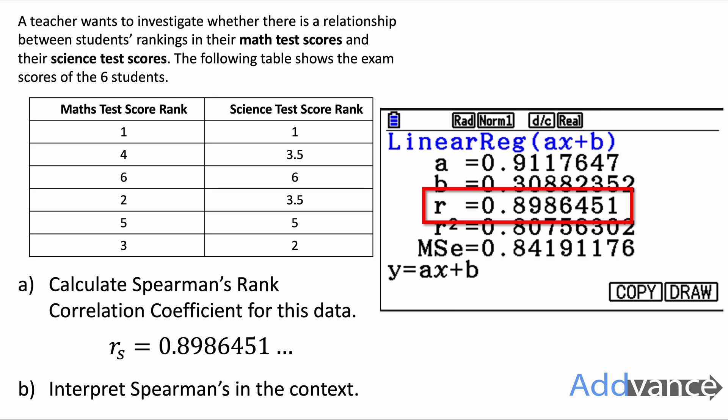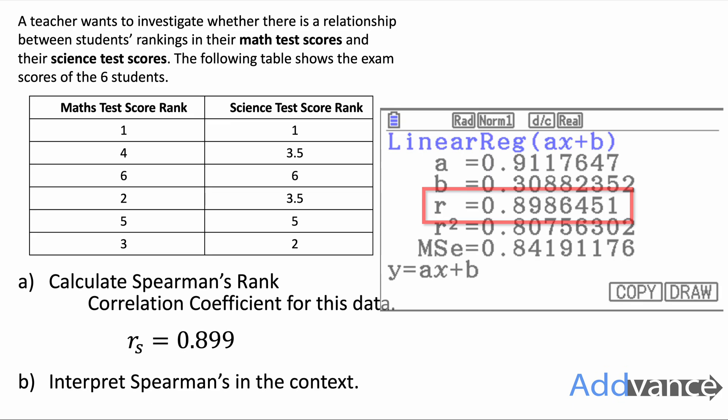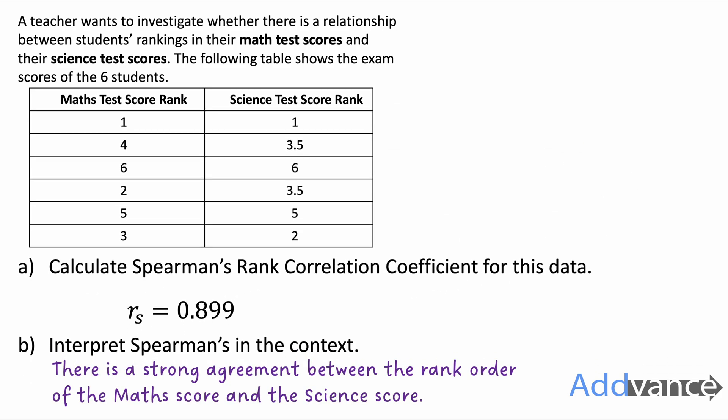What we've done is ranked the maths data and the science data, then followed Pearson's method on the calculator to find a value for R — that gives us the Spearman's value. So: rank the data, then find Pearson's, and that gives Spearman's. Rounding to three significant figures gives 0.899, which is a very high value. I can interpret this as: there is a strong agreement between the rank order of the maths scores and the science scores. When referring to Spearman's, it's a good idea to use the phrase 'rank order' in your answer.